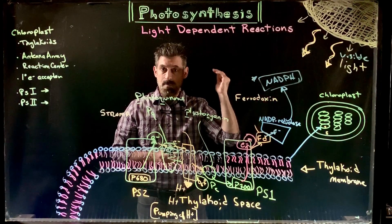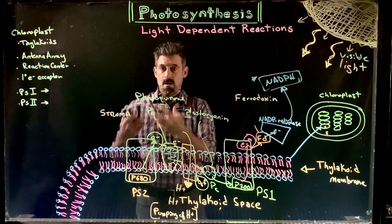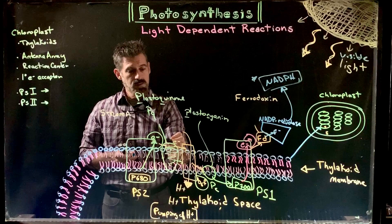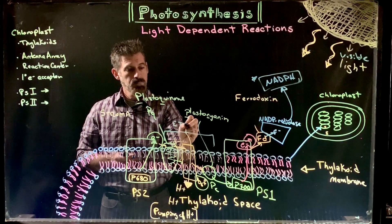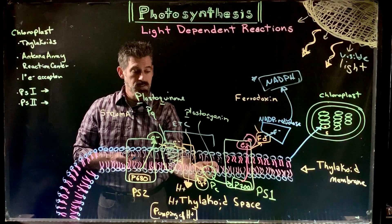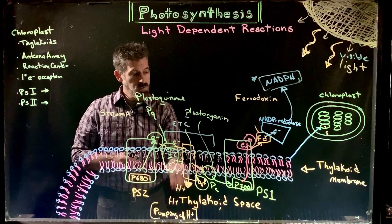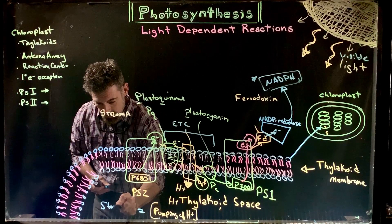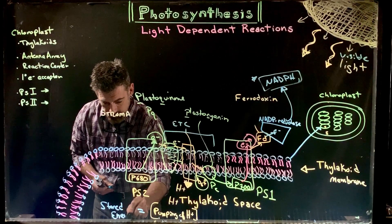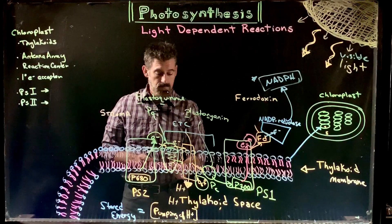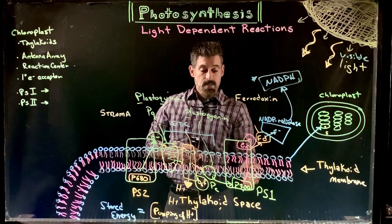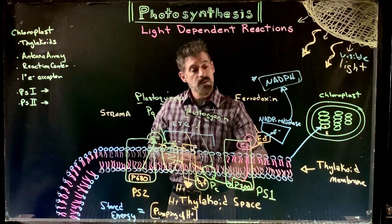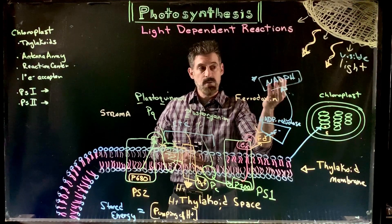NADPH is one of our major products of the light-dependent reactions. These reactions are dependent upon light energy exciting electrons — they harness that energy and pass it on as excited electrons. The electrons flow through an electron transport chain going from plastoquinone to B6f to plastocyanin to P700. As they flow along, protons get pumped into the thylakoid space and stored there as stored energy. The electrons then flow to Photosystem 1, get excited, go to ferredoxin, and are stored in NADPH.